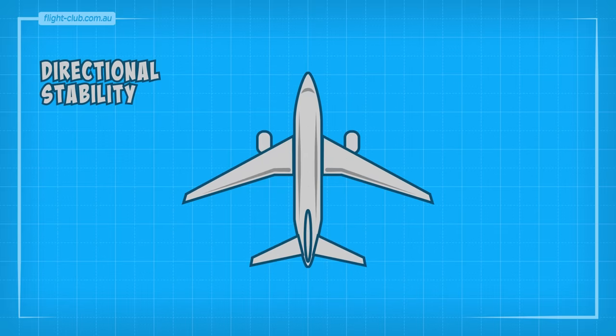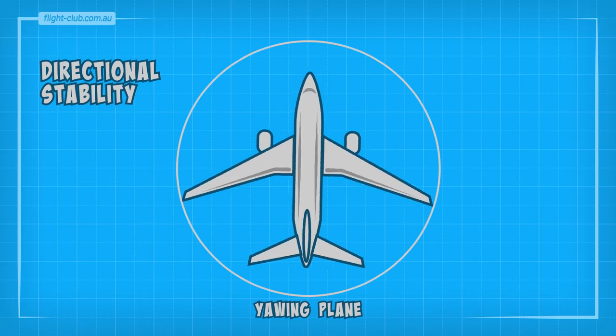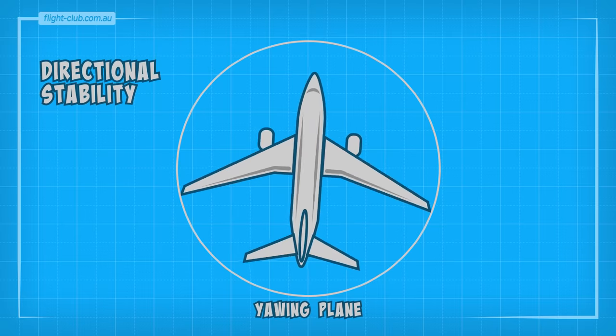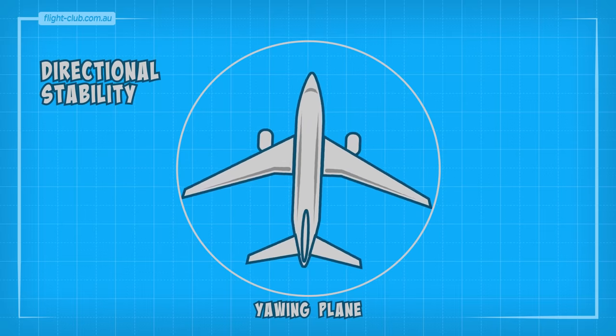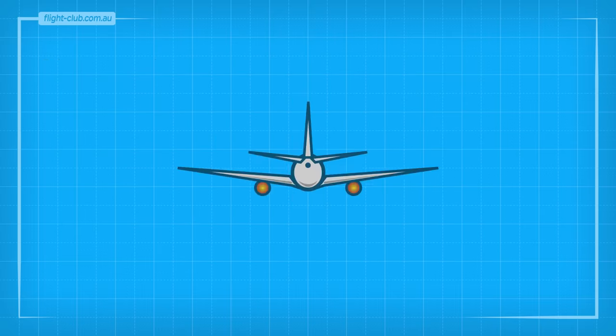Again, strong directional stability may cause the aeroplane to yaw back beyond its straight path in a sequence of decreasing oscillations. Sometimes, lateral and directional stability effects act in conflict with each other.